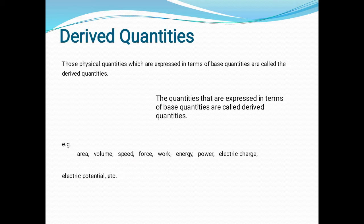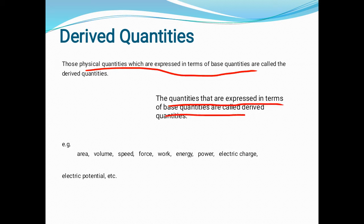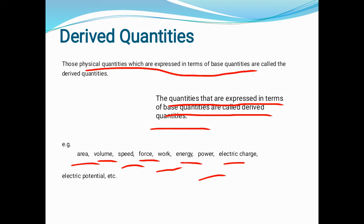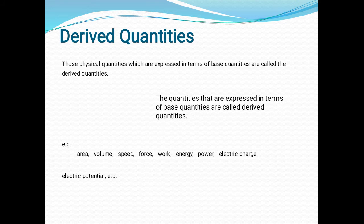Now let's discuss derived quantities. Those physical quantities which are expressed in terms of base quantities are called derived quantities. For example, area, volume, speed, force, work, energy, power, electric charge, electric potential, etc. So dear students, there are only seven base quantities, and many many derived quantities.